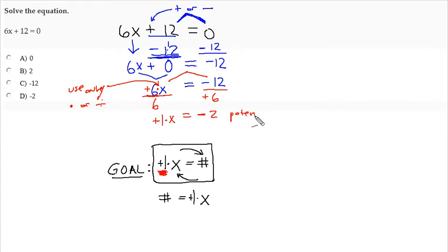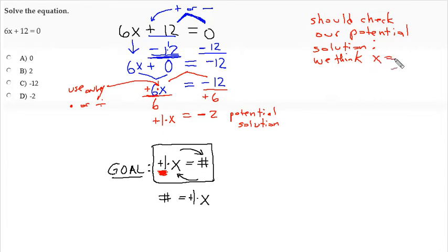It's only a potential solution because we haven't checked it in the original equation. We should check to make sure that when we walk out of a test or exam, we feel good that we've achieved the correct answer. Here's what we do to check a potential solution. We think the potential, we think x equals negative 2. Let me change colors. We go to the original equation, 6x plus 12 equals 0. We're about to substitute the value we arrived at for x and replace it by opening up parentheses. We write empty parentheses in the rest of the equation.